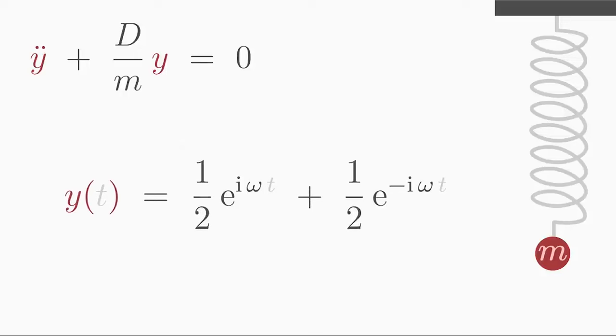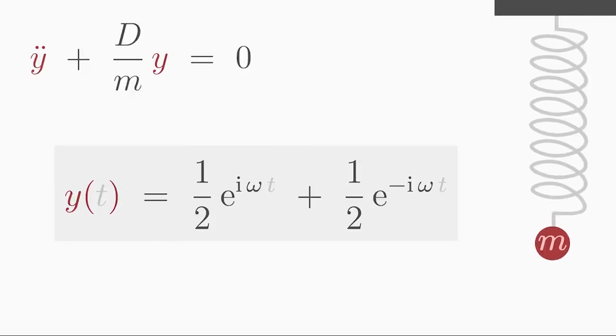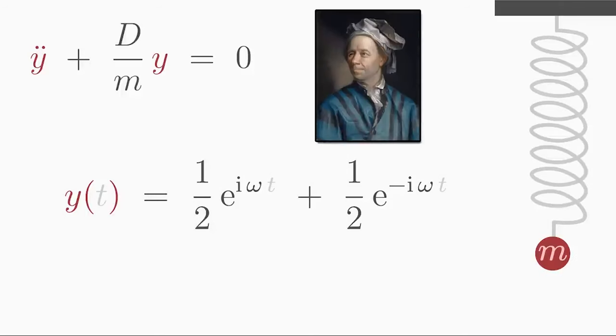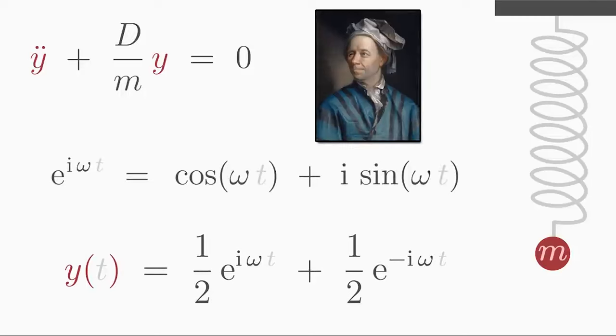Now, let's find out what this abstract solution has to do with oscillations. For this we get our friend Euler to help us, who tells us his famous Euler formula. e to the power of i omega t is equal to cosine of omega t plus i times sine of omega t. This relation tells us how the complex exponential function is related to cosine and sine functions.